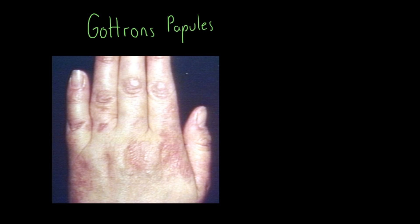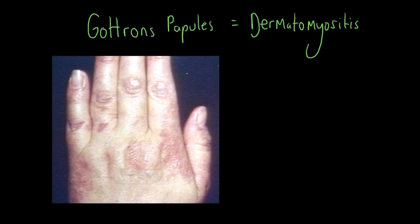This is an example of Gottron's Papules. These are lesions usually found on the hands of someone with a condition known as Dermatomyositis. Dermatomyositis is a chronic inflammatory disorder affecting the muscles.